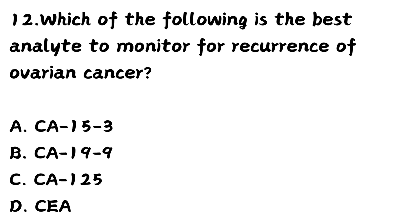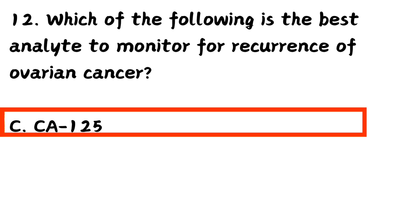Question number 12. Which of the following is the best analyte to monitor for recurrence of ovarian cancer? That means, which of the following is a marker for ovarian cancer? Option A, CA 15.3. Option B, CA 19.9. Option C, CA 125. Option D, CEA. The right answer is Option C — CA 125 is the marker for ovarian cancer.